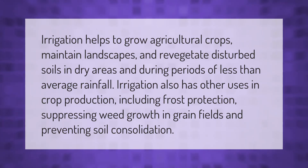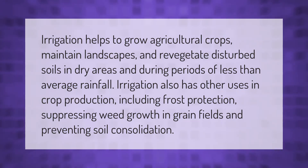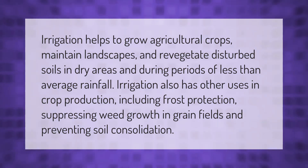Irrigation also has other uses in crop production, including frost protection, suppressing weed growth in grain fields, and preventing soil consolidation.